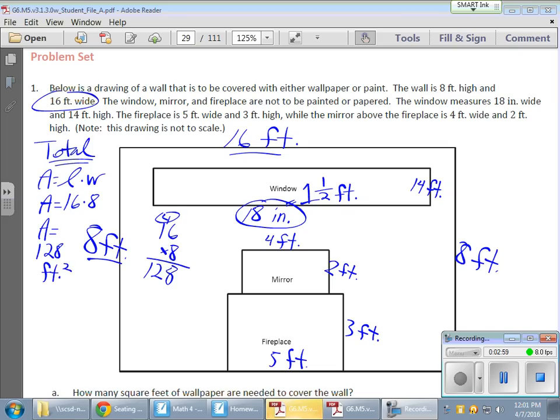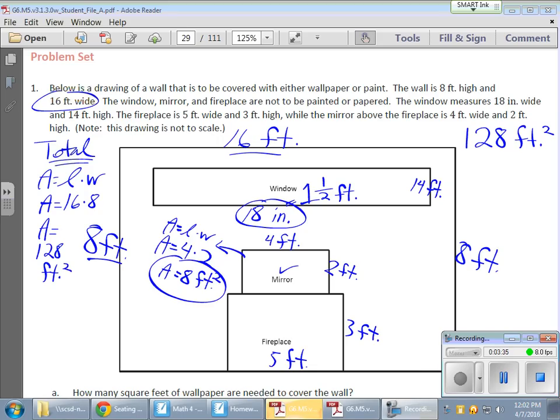Okay, now that I have that—my total—I need to find out those three pieces, the area of those three pieces, and then remove them from my total. So let me put that 128 over here because that's my total. Let's do the mirror. The mirror is length times width, and that mirror is 4 feet by 2 feet, which means it's 8 square feet. I'm going to need to remove 8 feet from that.